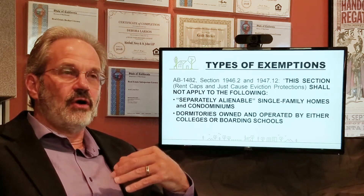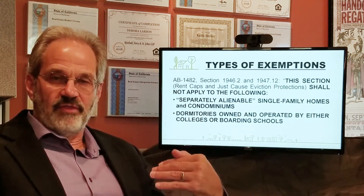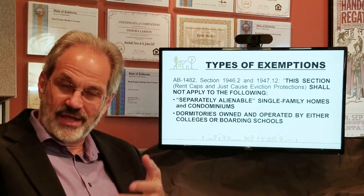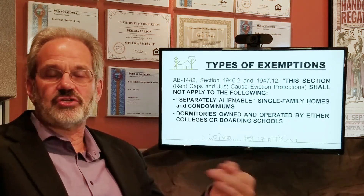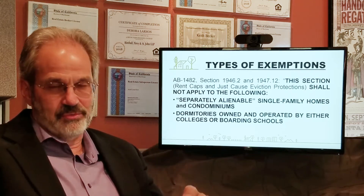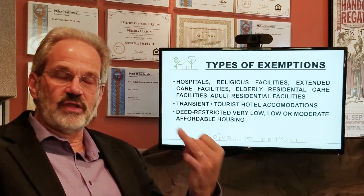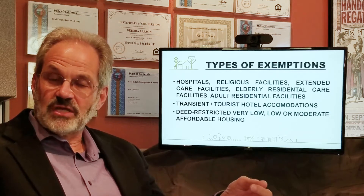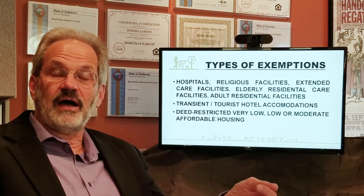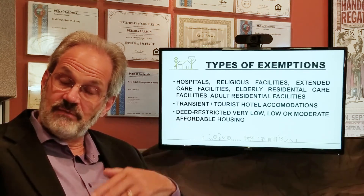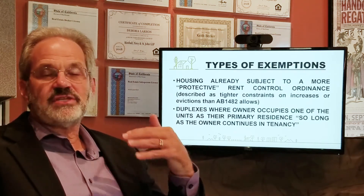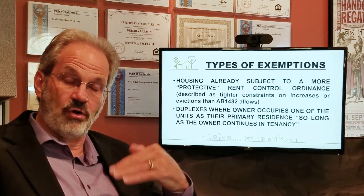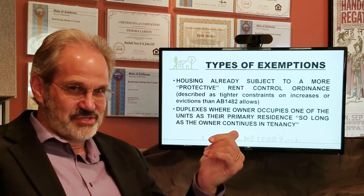There are a list of exemptions within this law. One is separately alienable single-family homes and condominiums — covered in a different segment. Additionally, dorms, colleges, universities, and boarding schools are not subject to rent control. Hospitals, elder care facilities, religious facilities, hotels, and deed-restricted very low or low income communities — those regulated by housing programs requiring income caps — are also exempt. Housing already subject to a more restrictive form of rent control is likewise excluded; if yours is more restrictive, AB 1482 doesn't soften it.